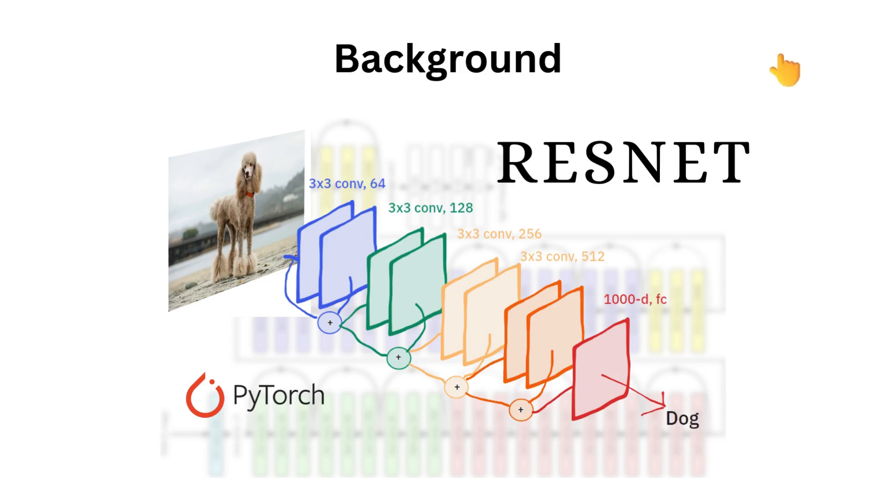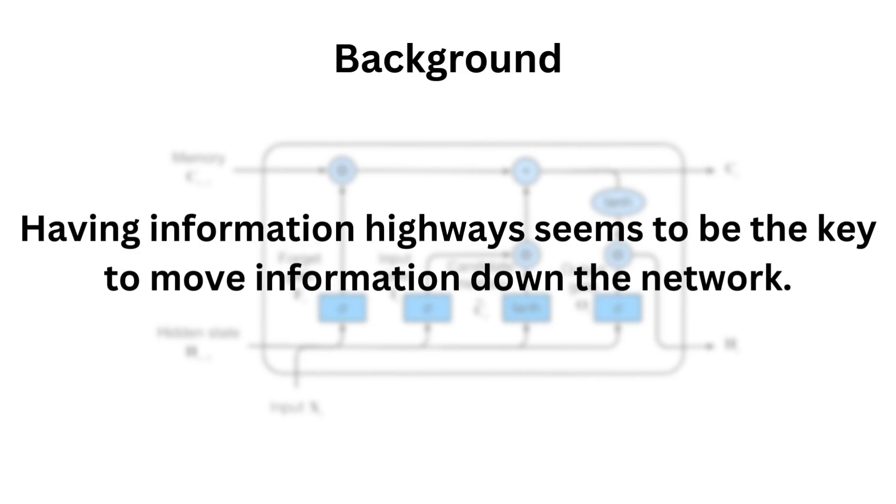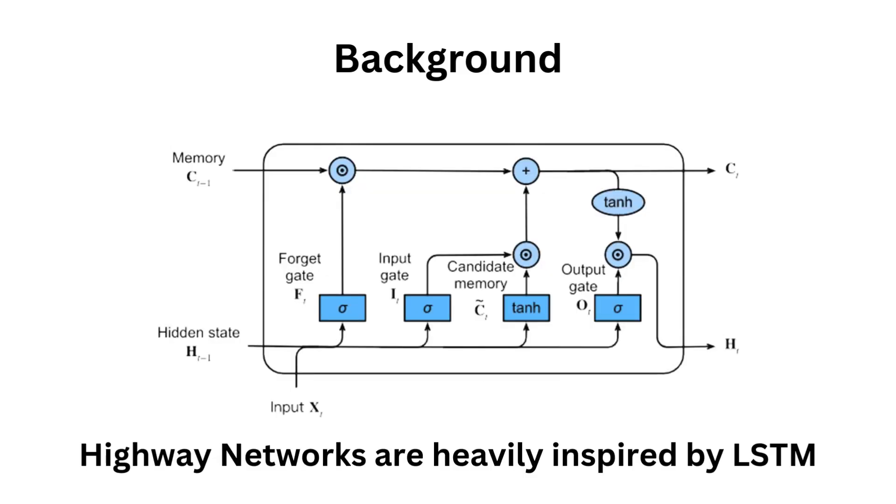The idea of having side paths in which information can flow seemed to be crucial, but it isn't a new concept. The long short-term memory cell had this type of architecture already, which allowed it to have information move for sequential data. The highway network architecture is heavily inspired by LSTM.